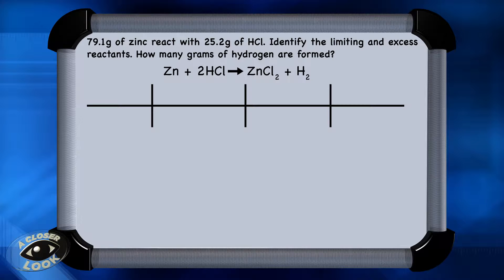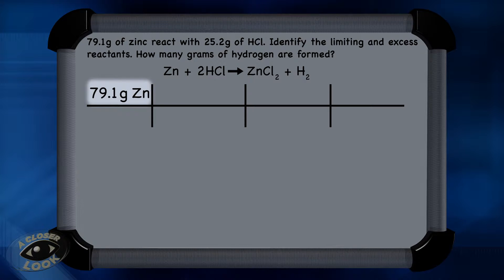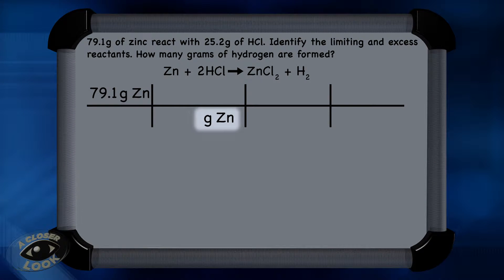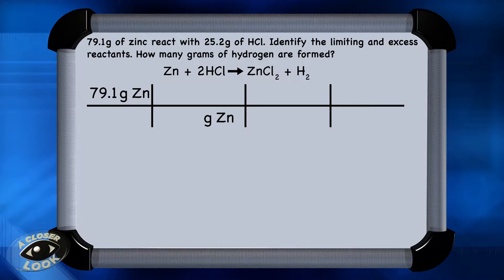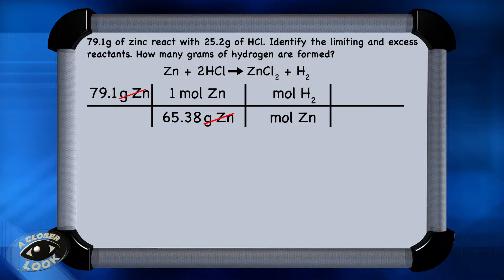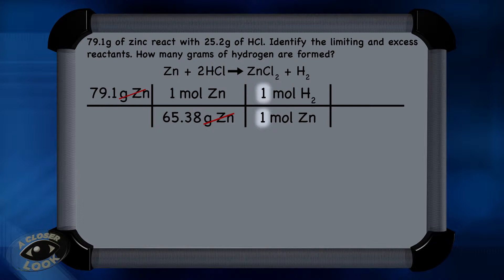Remember that when we're solving stoichiometry problems, we start with what's given to us, along with the units, and place it in the upper left-hand corner of a conversion chart. After placing 79.1 grams of zinc in the upper left-hand corner, we bring down grams of zinc to the denominator of the next column. We convert to moles of zinc by putting the molar mass of zinc, 65.38 grams, in the denominator, and then write one mole of zinc in the numerator. Then bring down the moles of zinc and convert from moles of zinc to moles of hydrogen using the mole ratio step. These are based on the coefficients in the balanced equation — an understood one for hydrogen and an understood one for zinc.